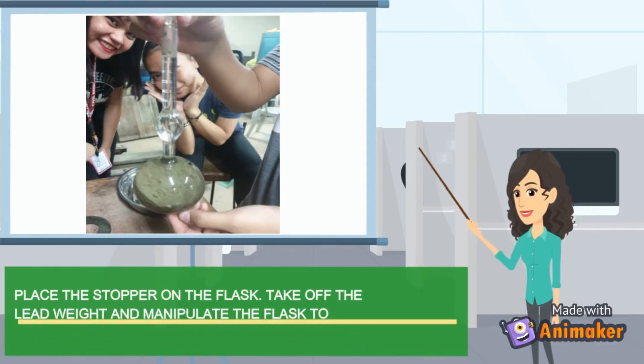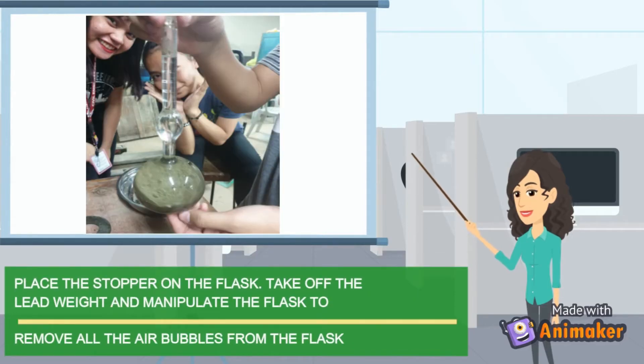Place the stopper on the flask. Take off the lead weight and manipulate the flask to remove all the air bubbles from the flask.